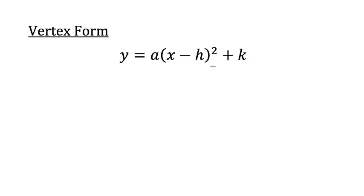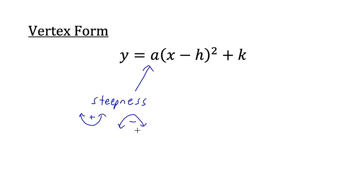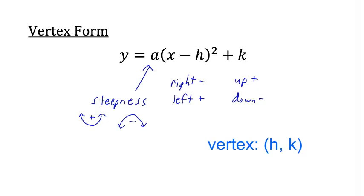Let's summarize. Here's a generic version of the vertex form equation for a quadratic. The 'a' determines the steepness — how steep or flat the graph is. If a is positive, the parabola faces upward; if a is negative, it faces downward. Inside the parentheses, x minus h moves it right when h is negative and left when it's positive. The k moves the vertex up when positive and down when negative. So the vertex is at the point (h, k).